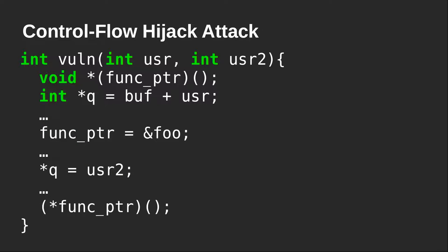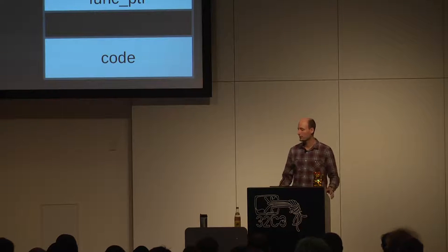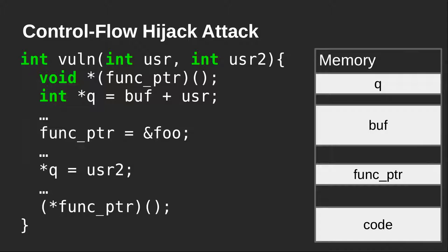Let's look at a particular code example. We have a small vulnerable function with a few lines of C code. Assume the attacker controls the two parameters: user and user2. There is also a function pointer defined somewhere in the program. The attacker can use these parameters to actually override part of the function pointer. If you look at the stack or memory layout, we see the individual variable queue, the buffer, the function pointer, and a piece of code at the bottom.